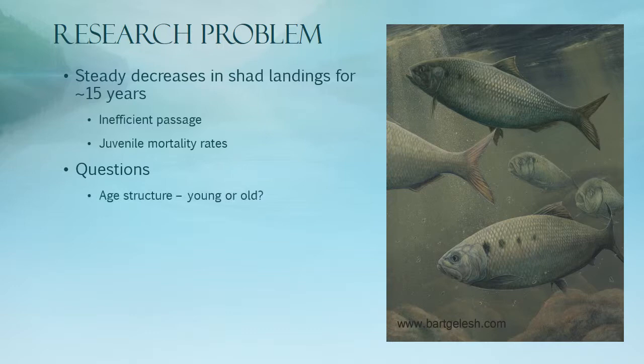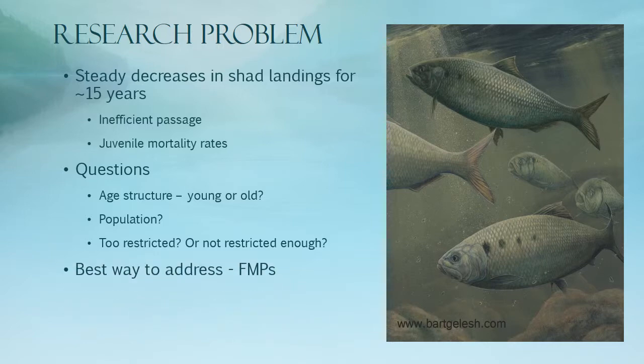Age structure is very important. If mostly young fish are being caught, fewer fish are left to grow old and reproduce over the next few years, leading to population decline. However, if older fish are caught too, more will be left to grow older and reproduce. Age structure can assist in population estimates, as well as setting commercial and recreational creel and size limits for fisheries. The best way to address any issue is through a well-informed fisheries management plan, of which relevant research topics and precise data are essential.